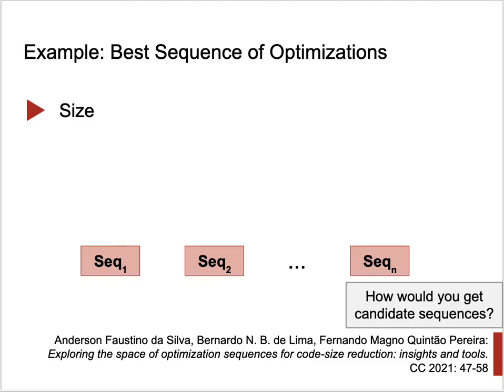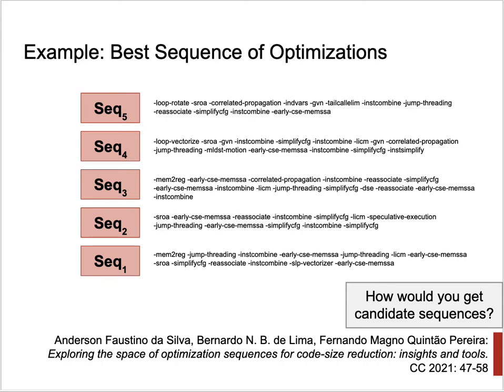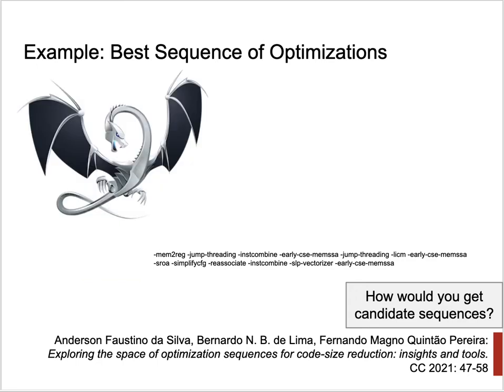An interesting question is how to get the candidate sequences. We need some sequences of optimizations to define the categories of predictions we can make. We can think of these candidate sequences as buckets, and we want to place each program into the bucket that best suits it. For example, Faustino proposed five sequences using a genetic algorithm, drawn from the more than 100 optimizations available in the LLVM compiler, which can be combined in many ways.